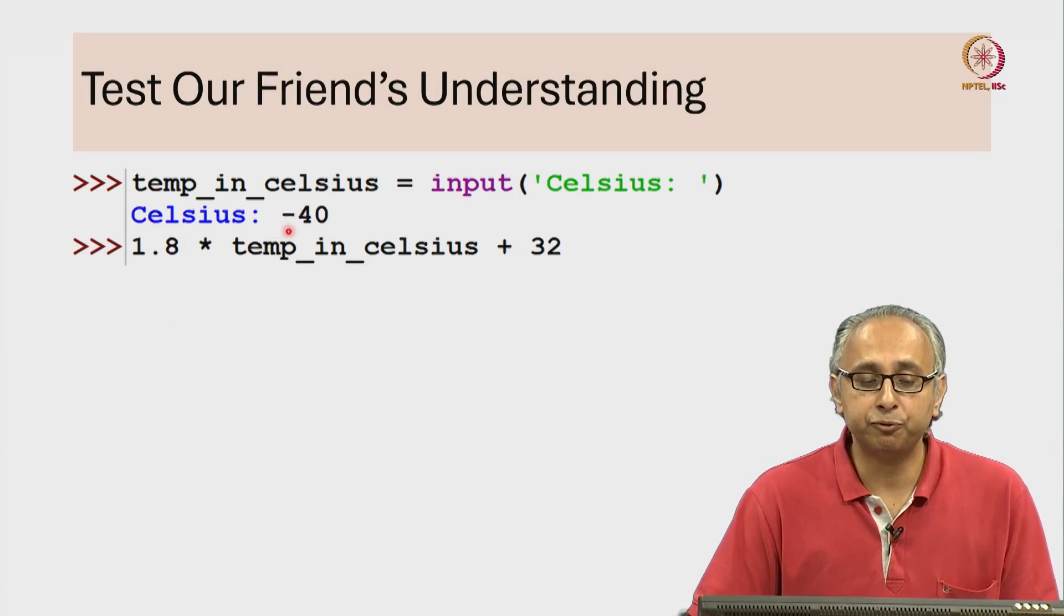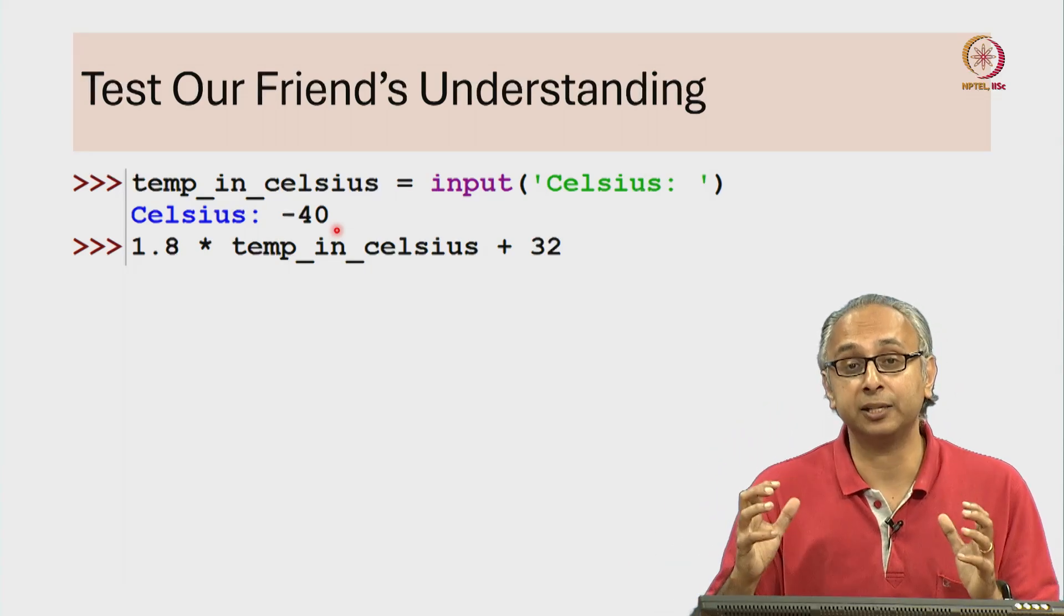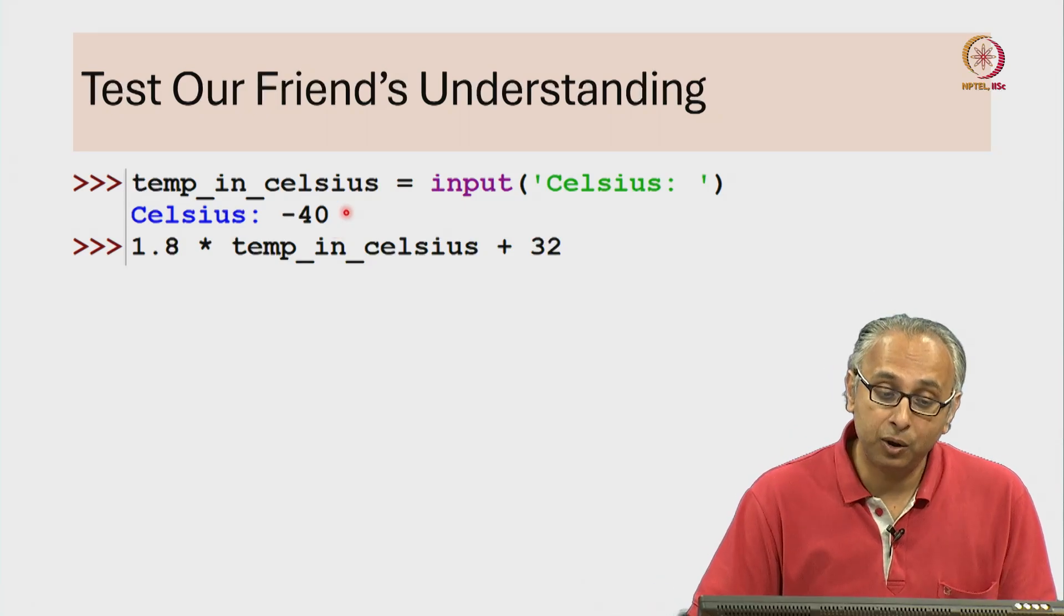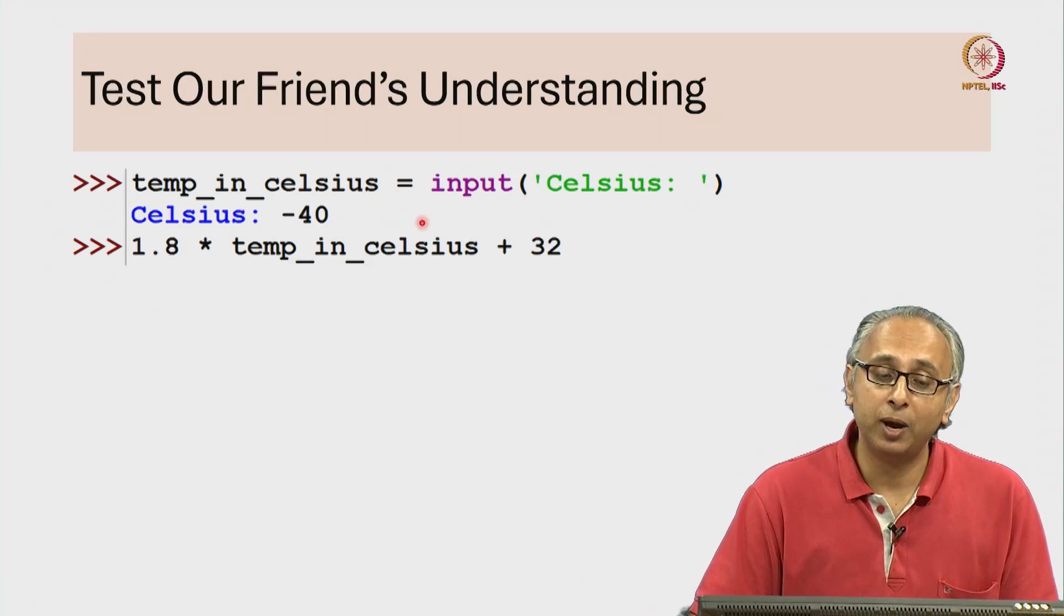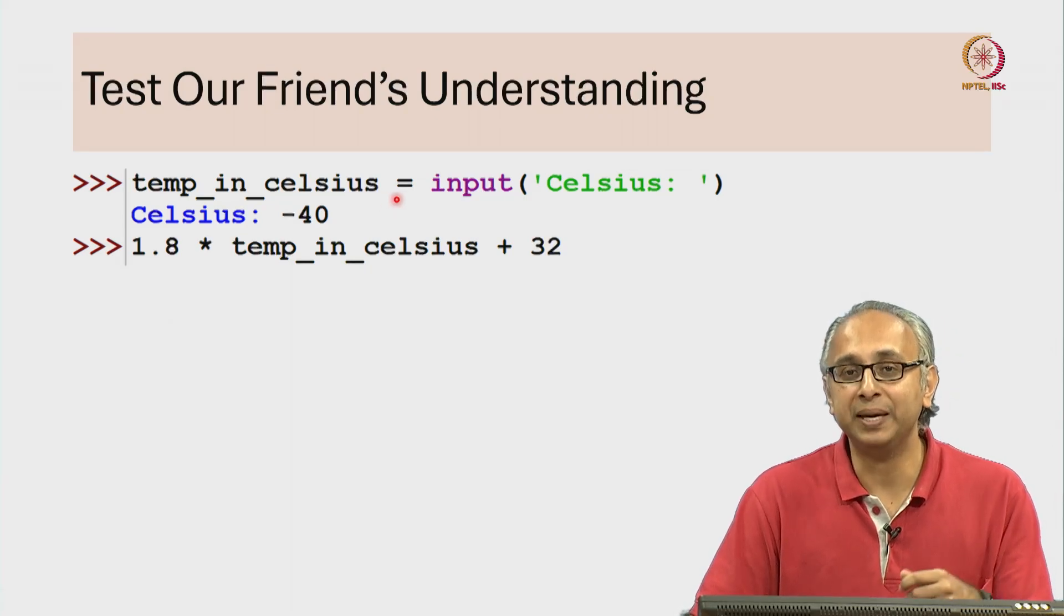Let us say our friend types in minus 40. When they press enter, that results in a string object. And now, how does the assignment statement work? Well it tags that object with this variable temp_in_celsius.